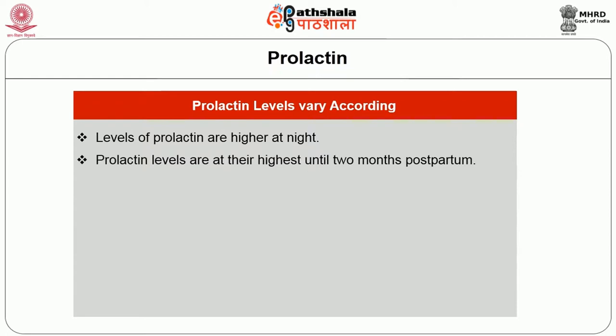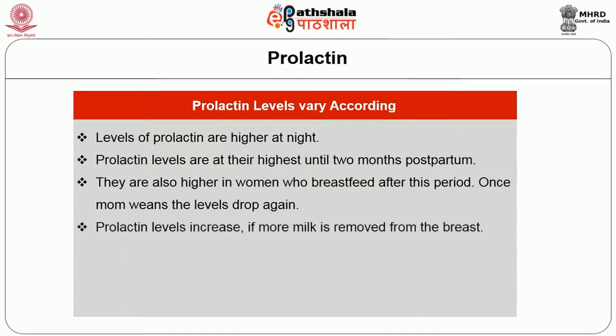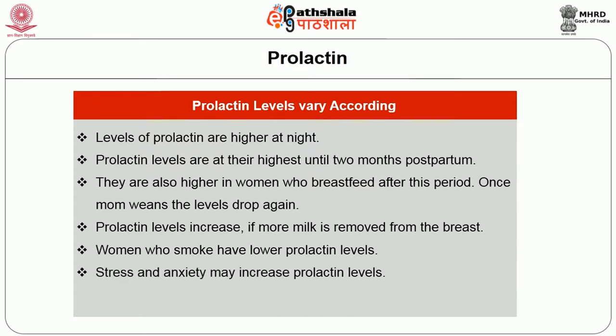Prolactin levels vary according to several factors. Levels are higher at night. They are highest until 2 months postpartum and also higher in the months after breastfeeding resumes following a period. Prolactin levels increase if more milk is removed from the breast. Women who smoke have lower prolactin levels. Stress and anxiety are inclined to delay ovulation.